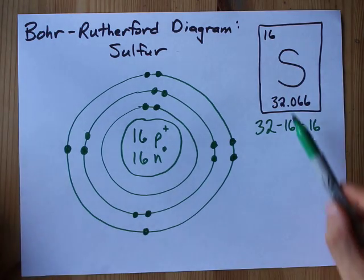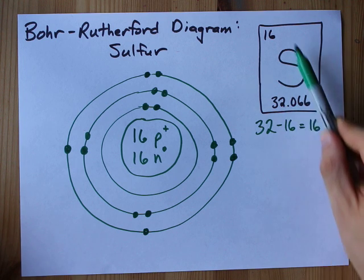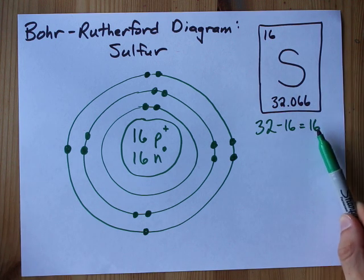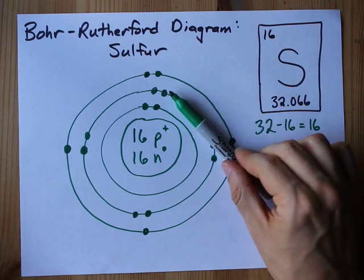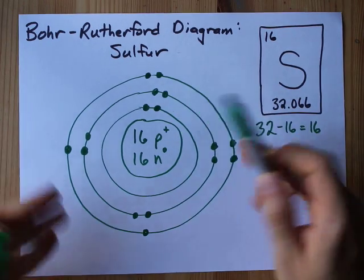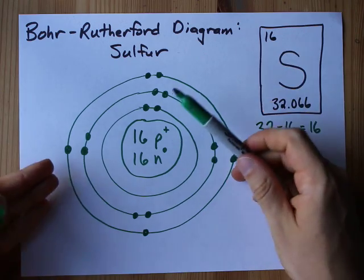That was beautiful. Sixteen protons, 32 minus 16 equals 16 neutrons, and 16 electrons in the first, second, and third shells.